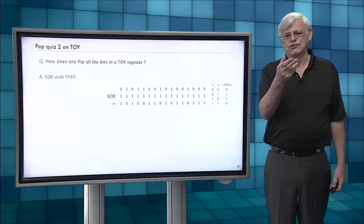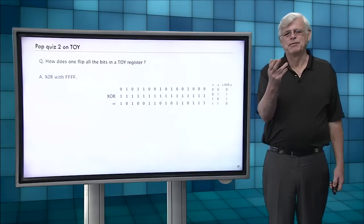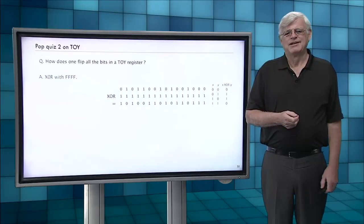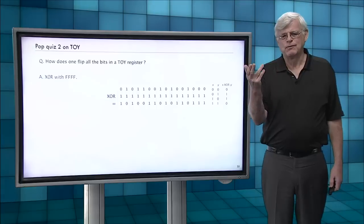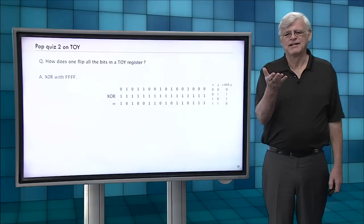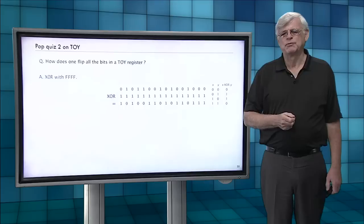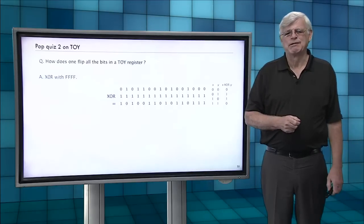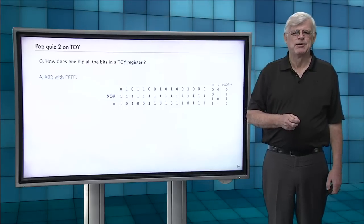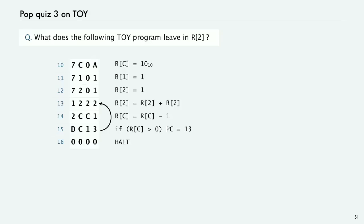So just as a trick, how do you flip all the bits in a TOY register? Well, if you XOR with all 1's, then XOR with 1 flips bits. And that's a kind of programming trick that every programmer knows. Everybody who programs at this level knows.